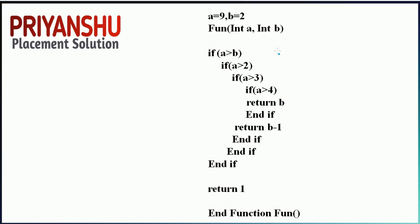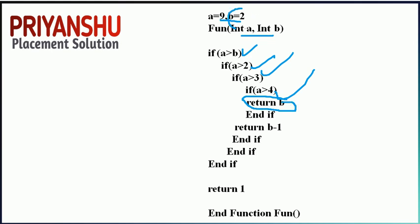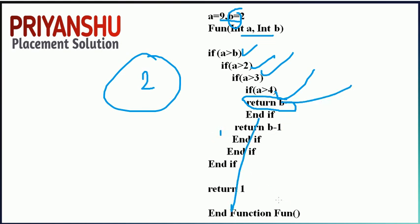Next question involves a function called with arguments 9 and 2. The function checks: 9 is greater than b (2), yes; 9 is greater than 3, yes; 9 is greater than 4, yes — all conditions are true, so we return b. The value of b is 2, so this function returns 2. After return, remaining lines are not executed.